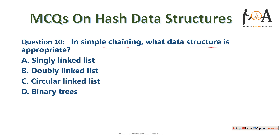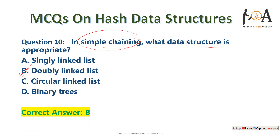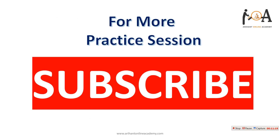In simple chaining, what data structure is most appropriate? A doubly linked list is appropriate because deletion is much easier — you can directly reach the first or last element and all elements in between. So option B is the most correct answer. Please subscribe to our YouTube channel, ask your doubts in the comments, and have a great day!